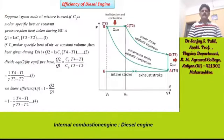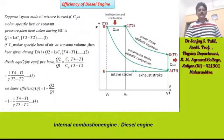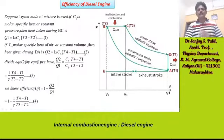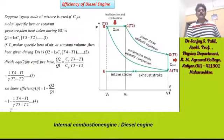Now we will look at the efficiency of the diesel engine. Suppose 1 gram mole of mixture is used. If Cp is the molar specific heat at constant pressure, then heat taken during BC is Q1 = 1 × Cp × (T3 − T2). Dividing equation 2 by equation 1, we get Q2/Q1 = (Cv/Cp) × (T4 − T1)/(T3 − T2), and since gamma = Cp/Cv, this gives (1/gamma) × (T4 − T1)/(T3 − T2), which is equation 3.